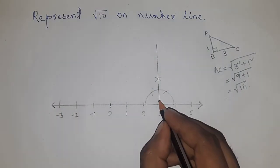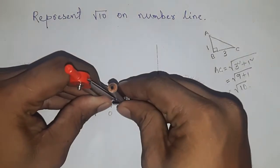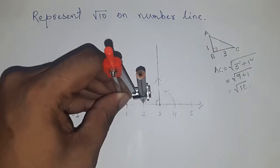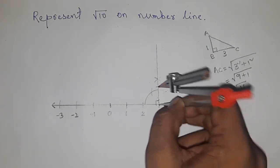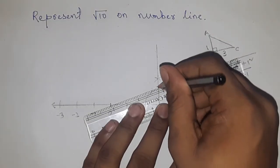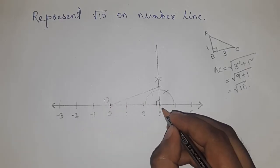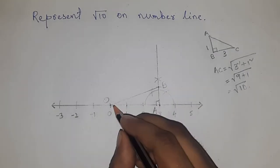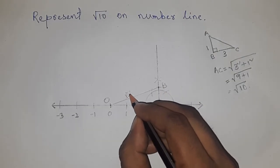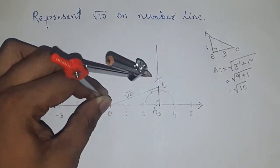We got the 90 degree angle. Now taking the length between any two numbers — all distances are the same — so putting in the compass here and cutting the line. Next, joining 0 to this point. This gives us triangle OAB, which is a right angle triangle, and this hypotenuse is root 10.